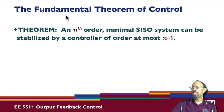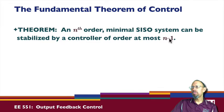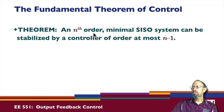It's called the fundamental theorem of control. Just as we've heard of the fundamental theorem of calculus, we have a fundamental theorem of control, which says this: an n-th order minimal single input single output system can be stabilized by a controller of order at most n minus one. So this tells us something about control — it's a general theorem.